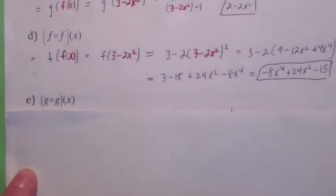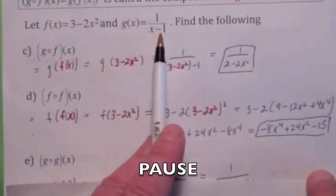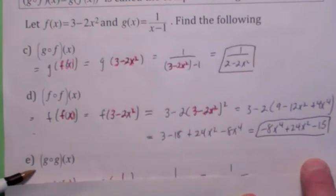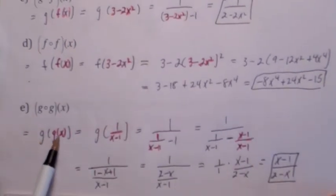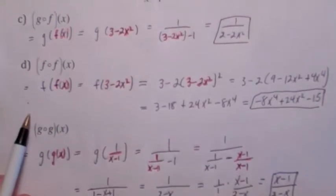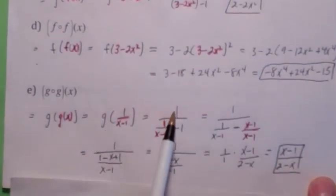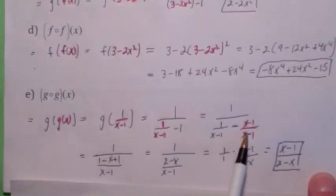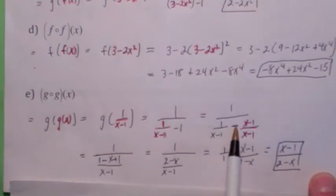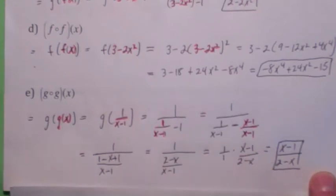See if you can compute g circle g of x, where g of x is 1 over x minus 1. It's kind of messy, but g circle g of x is g of g of x. You first compute g of x, which is 1 over x minus 1. Now wherever there's an x in g of x, you replace it with 1 over x minus 1, giving 1 over (1 over x minus 1) minus 1. When you simplify and get the common denominator, which is x minus 1, that minus sign distributes across the whole numerator, so it becomes a plus. On the denominator you get 2 minus x over x minus 1, and when you flip and multiply, the final answer is x minus 1 over 2 minus x.